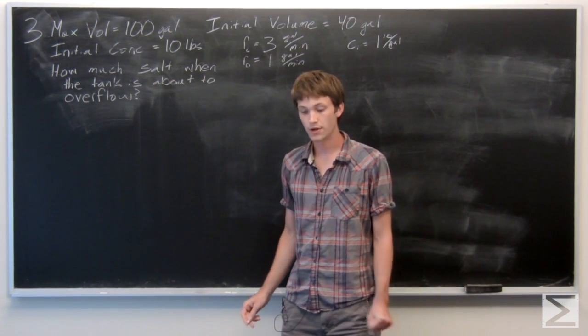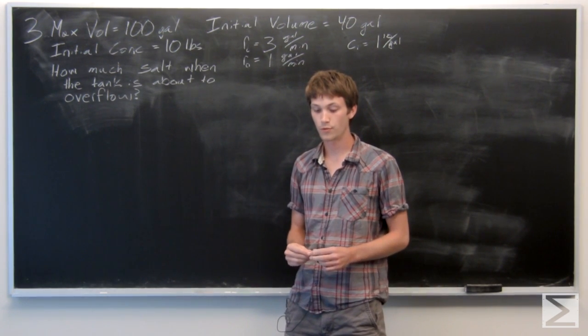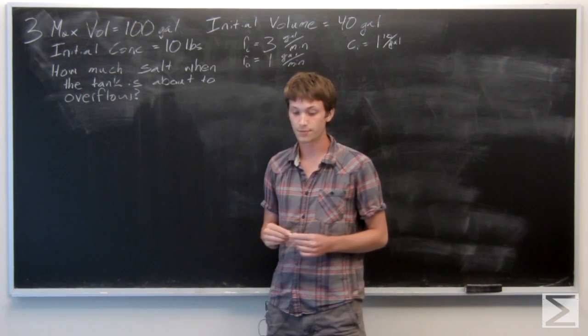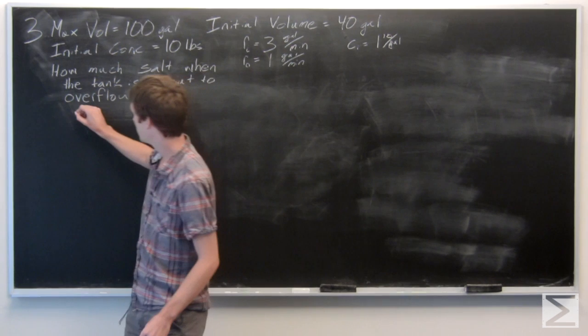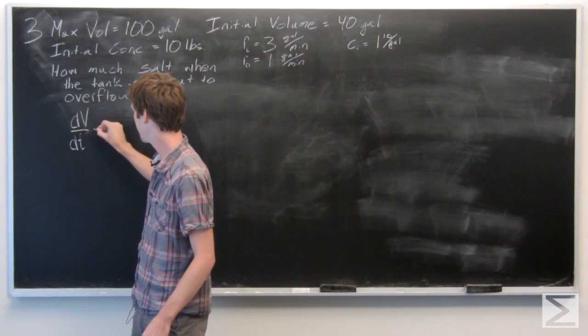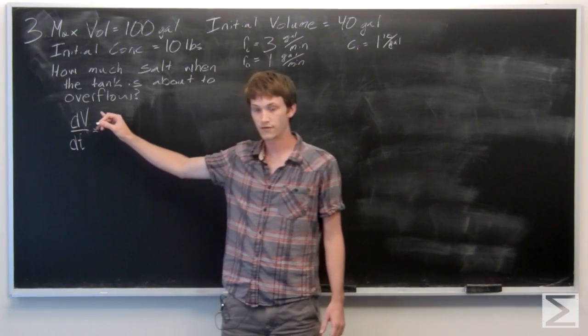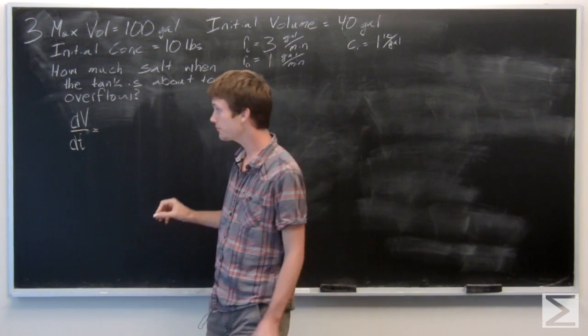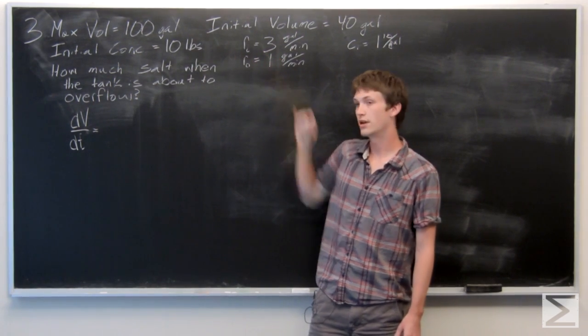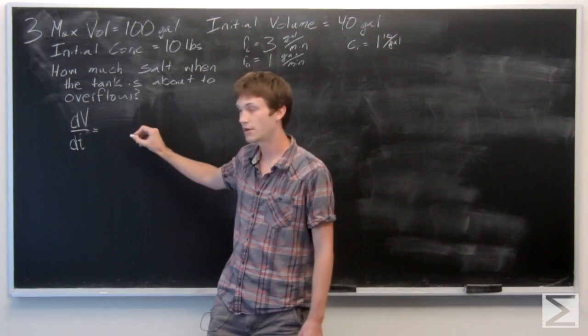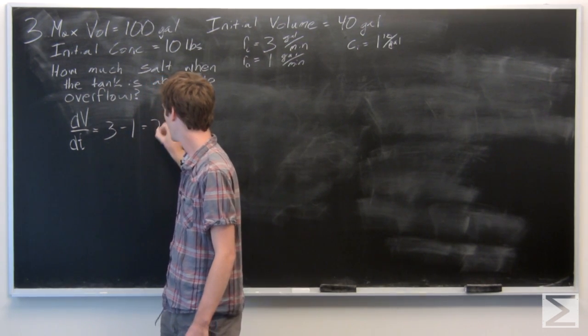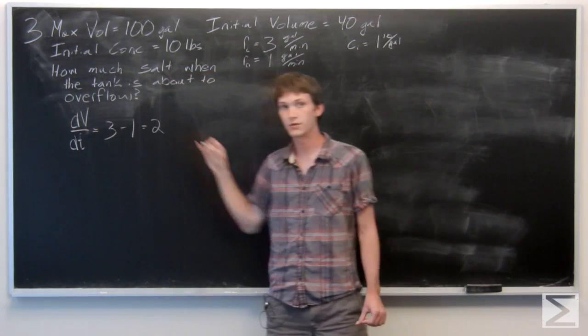Okay, so for this problem we're going to first want to find the rate at which the volume is changing. And we can express that with a change in volume over time. And we know that there's a rate in of 3 and a rate out of 1. So just rate in minus rate out gives us 2 gallons per minute.